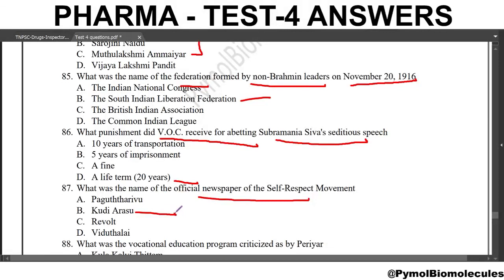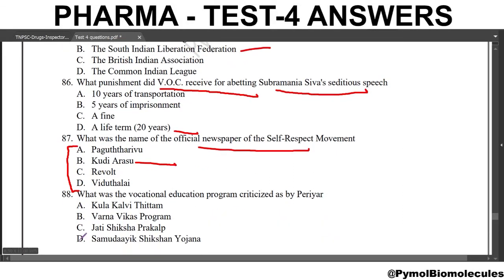Kudi Arasu is the official newspaper. All these newspapers were written by E.V.R. Periyar — Kudi Arasu, Revolt, Puratchi, Pagutharivu and Viduthalai. Next question: what was the vocational education program criticized by Periyar? The answer is the Kula Kalvi Thittam, which was introduced by Rajaji.